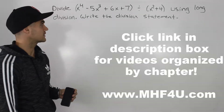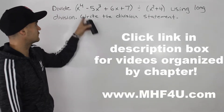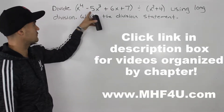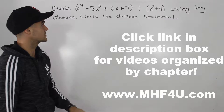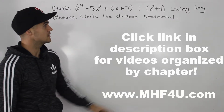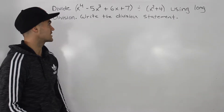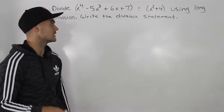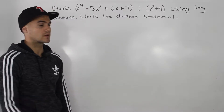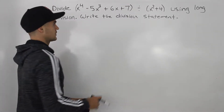What up, everybody? Welcome back. Moving on to the next question, we have to divide x to the power 4 minus 5x cubed plus 6x plus 7 by x squared plus 4 using long division. Then we have to write the division statement.